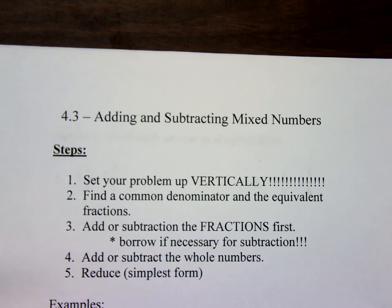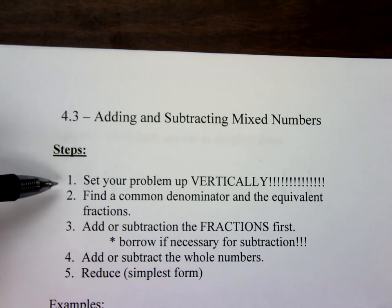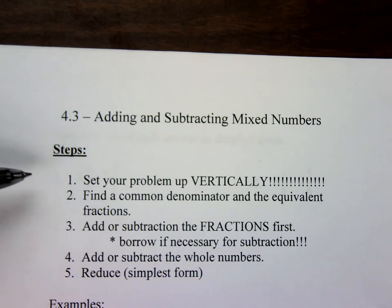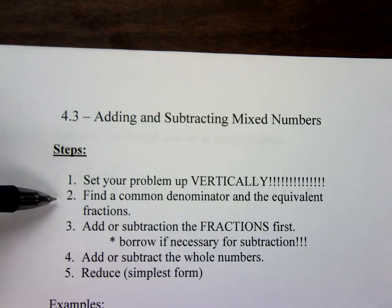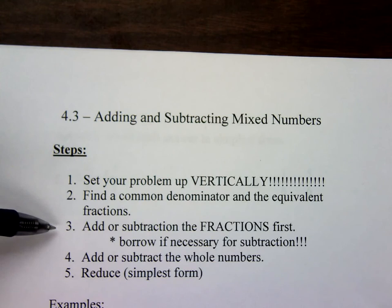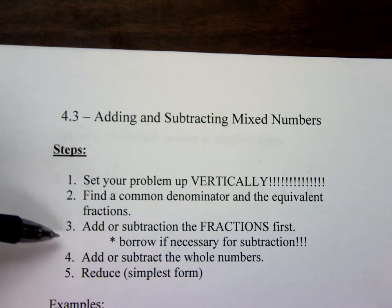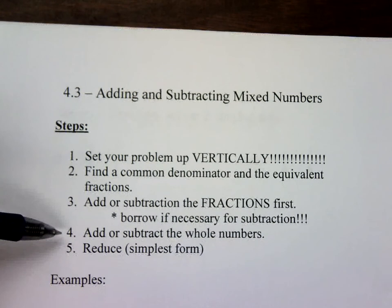Today's lesson is 4.3, adding and subtracting mixed numbers. Step one: set your problem vertically, always vertically, just like yesterday. Step two: find a common denominator and the equivalent fraction. Step three: add or subtract the fractions first, borrow if necessary for subtraction. Step four: add or subtract the whole numbers. Step five: reduce to simplest form.